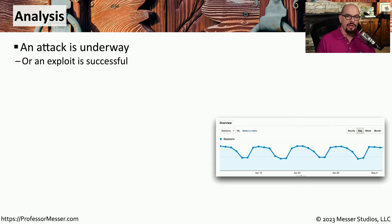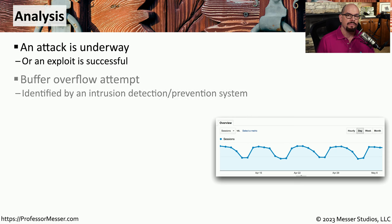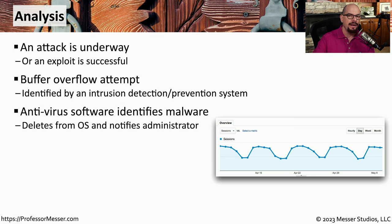It's obviously important to know when an attack occurs, and there may be things you can look at in your network that can give you a notification that an attack is underway. For example, you might get an alert from your intrusion prevention system that a buffer overflow attempt was made against a particular server. Or maybe an antivirus report is showing that malware has been installed on a particular user's workstation.